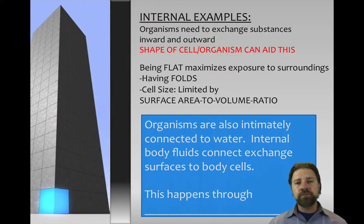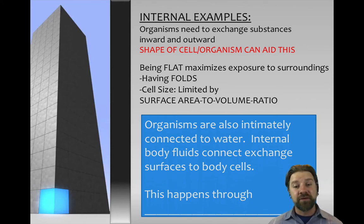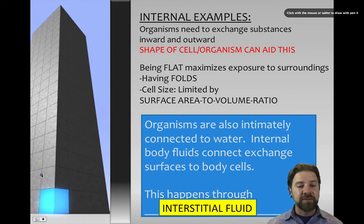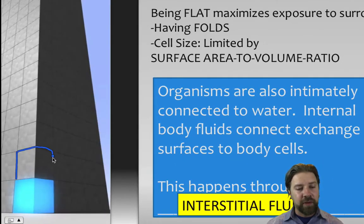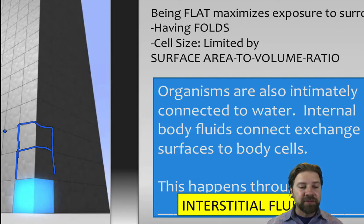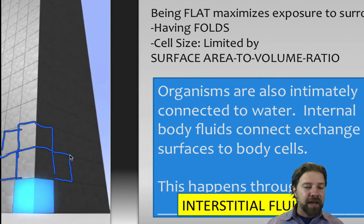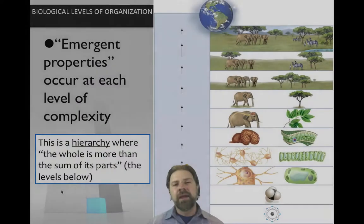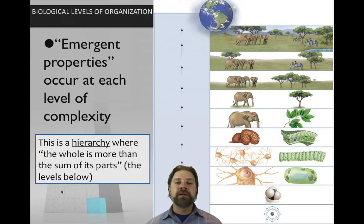Organisms are also intimately connected to water. Internal body fluids connect exchange surfaces to body cells through interstitial fluid. Between all the cells there is water — not pure water, but interstitial fluid full of ions and proteins — and this biological fluid existing between cells allows nutrients to get in and waste products to be washed away.